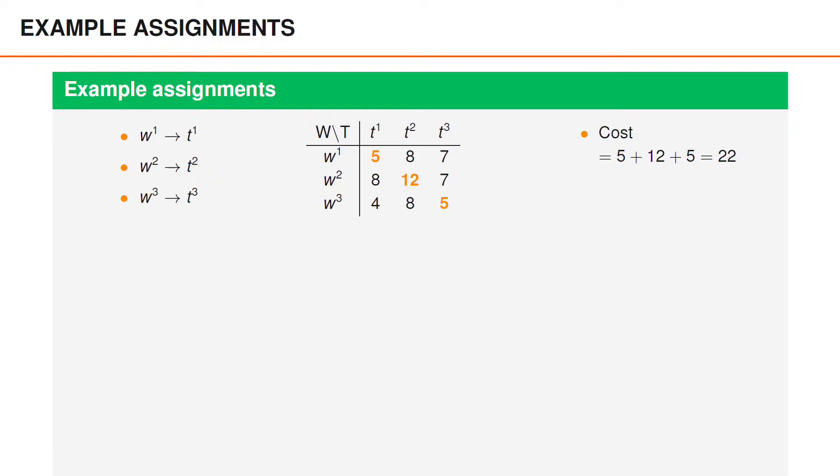So we can have a look at some example assignments. If we assign worker 1 to task 1, worker 2 to task 2, and worker 3 to task 3, then the cost of the assignment is 5 plus 12 plus 5, which is equal to 22.